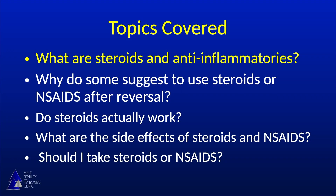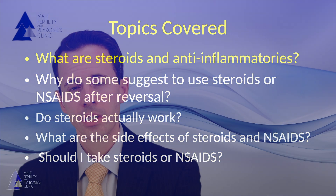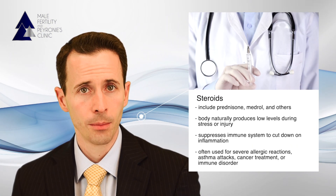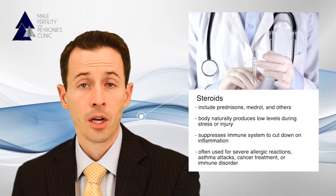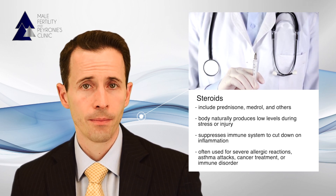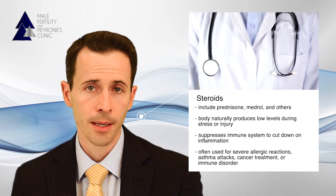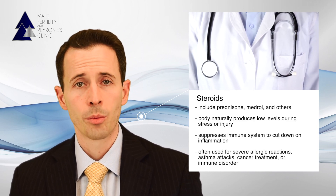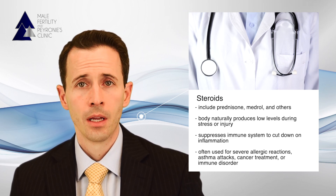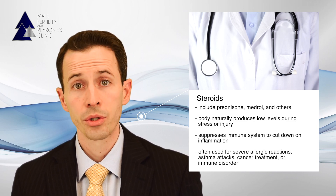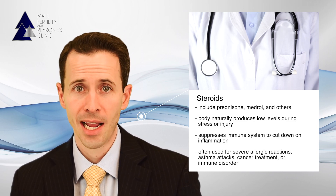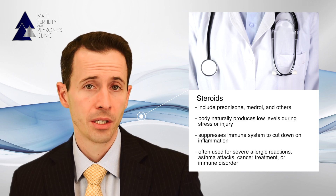Proceeding with number one — what are steroids and anti-inflammatories? Steroids include glucocorticoids such as prednisone, Medrol, or other similar types of drugs. Your body naturally produces these from the adrenal gland in cases of stress or injury, but they're normally at very low levels. The drug works to suppress your immune system, which then cuts down on inflammation. When given for medical purposes, they're most often used in cases of severe or life-threatening allergies, asthma attacks, cancer treatment, or immune system disorders.